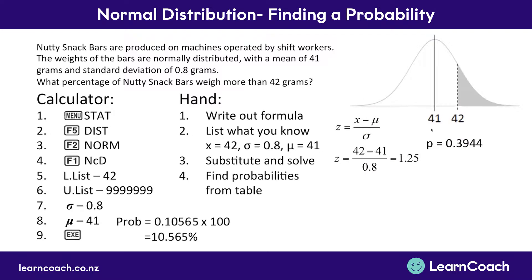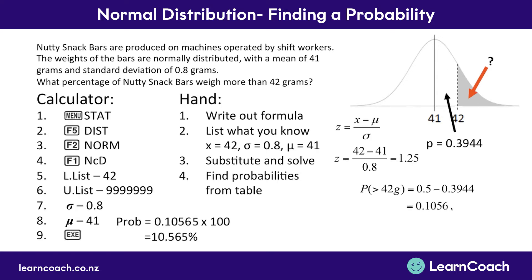That number 0.3944 is the probability that something will exist from the mean up to 42 grams — this section between 41 and 42. But we're not interested in that section; we're interested in the area above 42 grams. We can figure that out by knowing that the whole right-hand side of the curve is 0.5. So we do 0.5 minus 0.3944, which leaves us with 0.1056 — the same as what we found on our calculator.